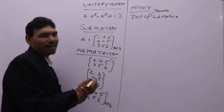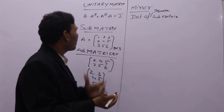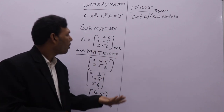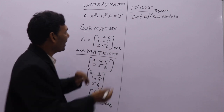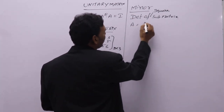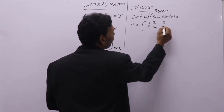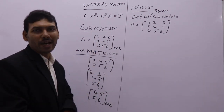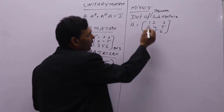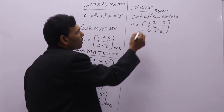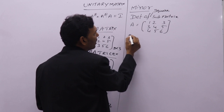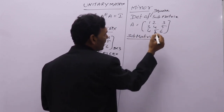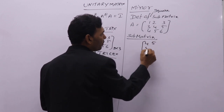We can remember: sub-matrix means a matrix obtained from the actual matrix by deleting one row and one column. For example, A equals 1, 2, 3 / 3, 4, 5 / 4, 5, 6. If you want a square sub-matrix for this, you need to delete one row and one column. So deleting the first row and first column gives a square sub-matrix of order 2: 4, 5, 5, 6.